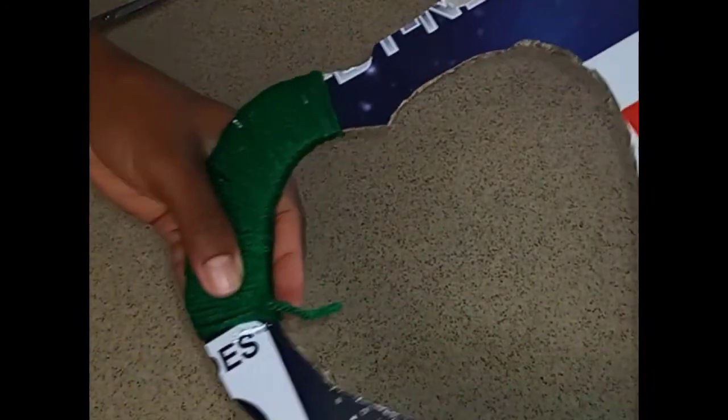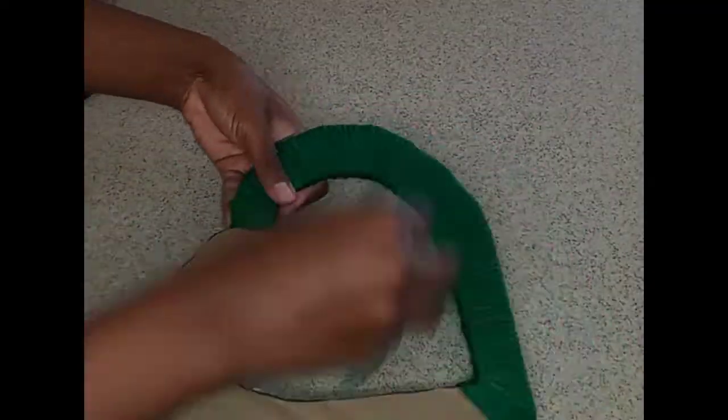After your thread has finished, just go ahead and use your glue gun to seal your thread together. Just wrap your cardboard as neatly as you can.